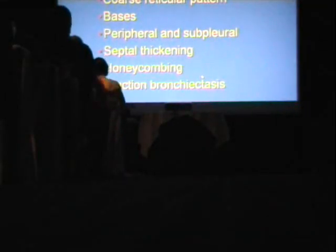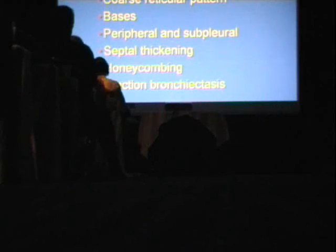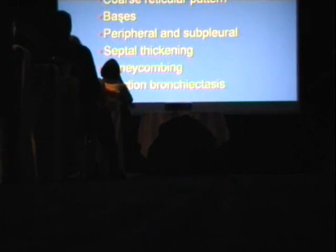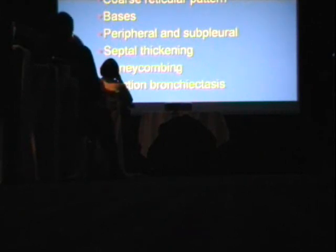The best example of a linear pattern is UIP — usual interstitial pneumonia. If UIP has no cause, it's called idiopathic pulmonary fibrosis, which is the clinical term; UIP is what the pathologist uses. The classic HRCT findings include a coarse reticular pattern, much more marked at the bases, peripheral and subpleural in location — unlike sarcoid which was central. There is septal thickening, honeycombing (which really helps make the diagnosis, indicating end-stage fibrotic lung), and traction bronchiectasis.